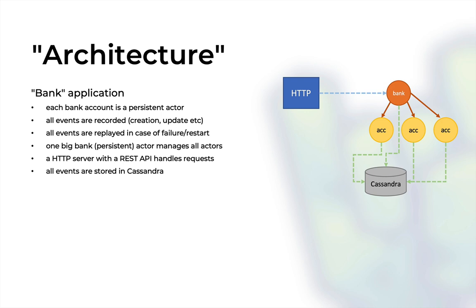We will use event sourcing for this application — all events are recorded to Cassandra and replayed in case an actor dies or the entire application needs to be restarted. We'll also have one bigger actor — the bank itself — that manages all accounts. We'll interact with the entire system through an HTTP REST API, and all events will be stored in Cassandra for long-term storage and fault tolerance.